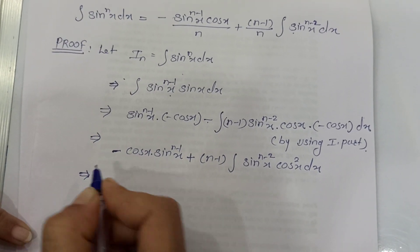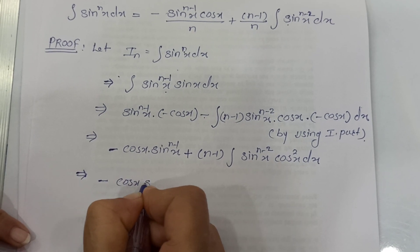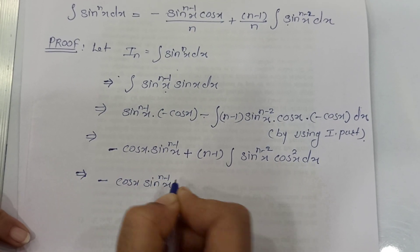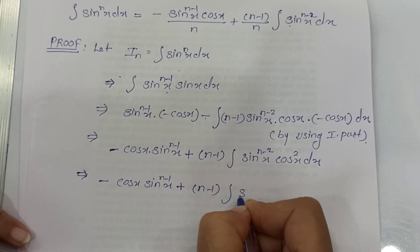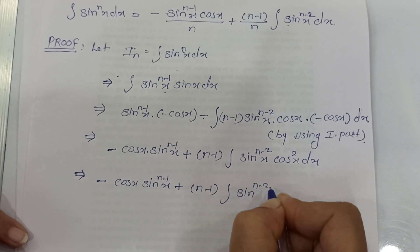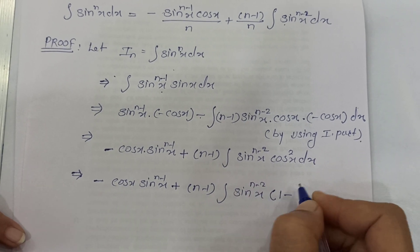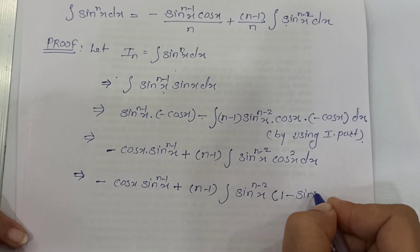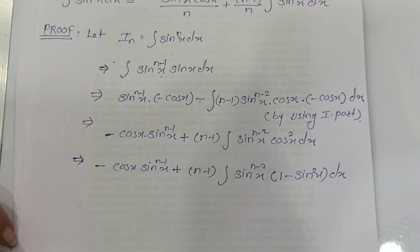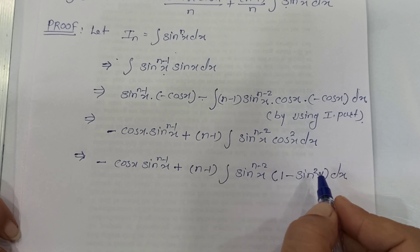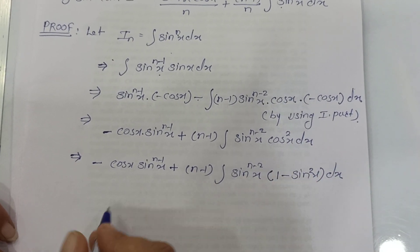The next step is to write the first term as it is — we will not touch it anymore. Then plus n minus 1, integration of sin raised to n minus 2 x. Instead of cos squared, we replace it with 1 minus sin squared x dx, using the trigonometric identity sin squared plus cos squared equals 1.